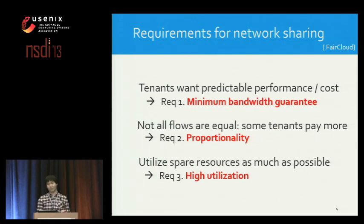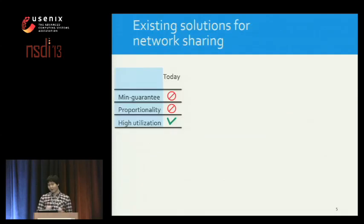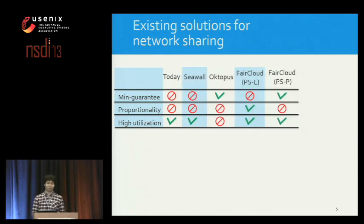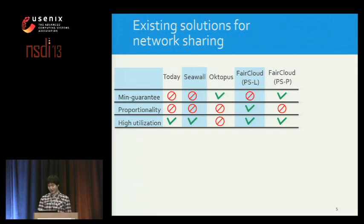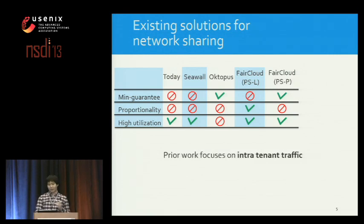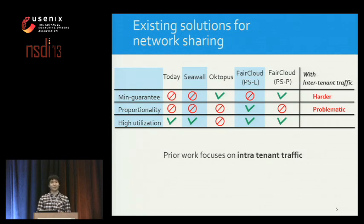These three requirements are not new and many prior works have addressed them. However, most of today's data centers only provide high utilization. The key point is that no prior work satisfies all three requirements. It has been shown that minimum bandwidth guarantee and some definitions of proportionality are not compatible. Furthermore, all prior work focuses only on intra-tenant traffic. However, we find that inter-tenant traffic is prevalent in today's data centers, and it makes minimum bandwidth guarantee harder and proportionality more problematic.